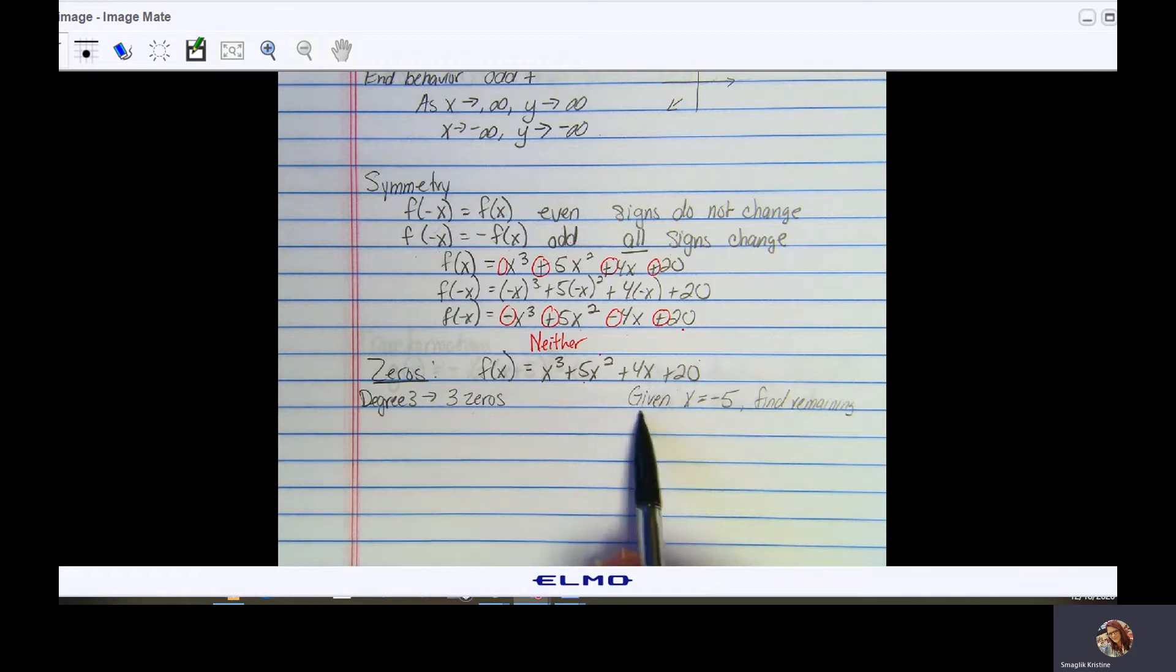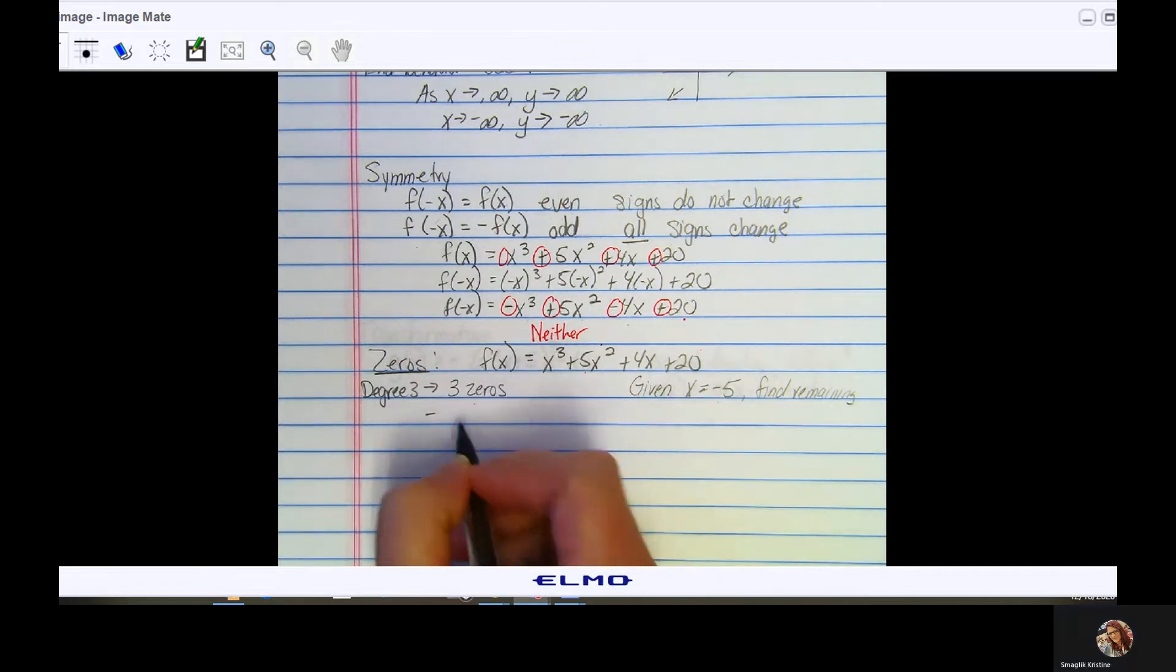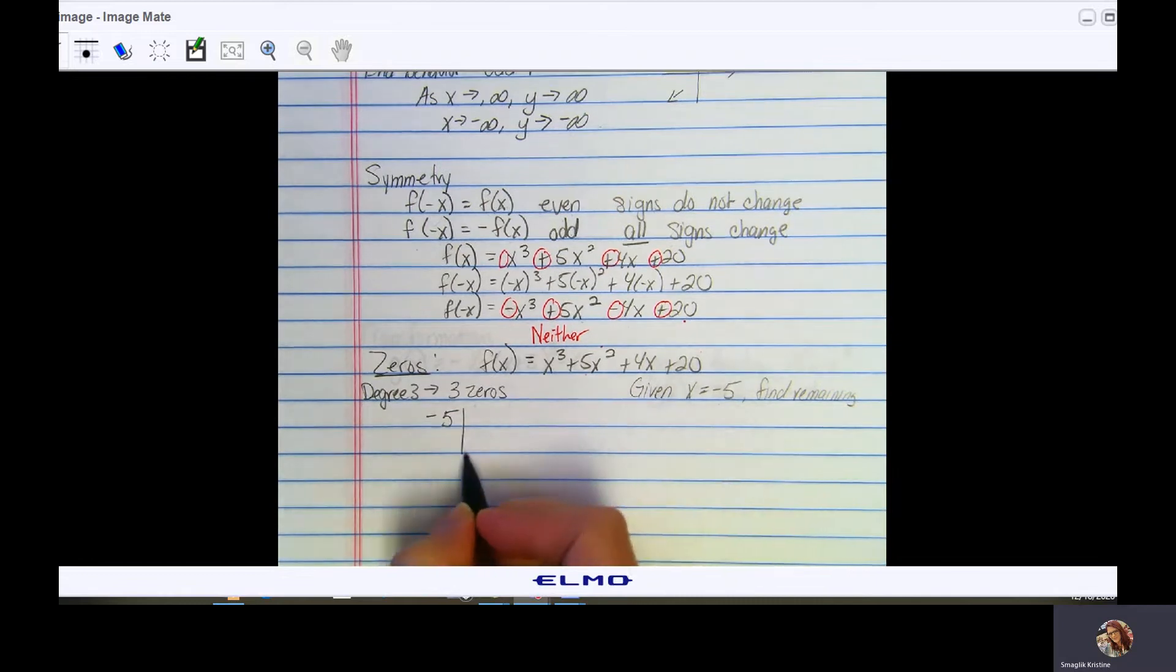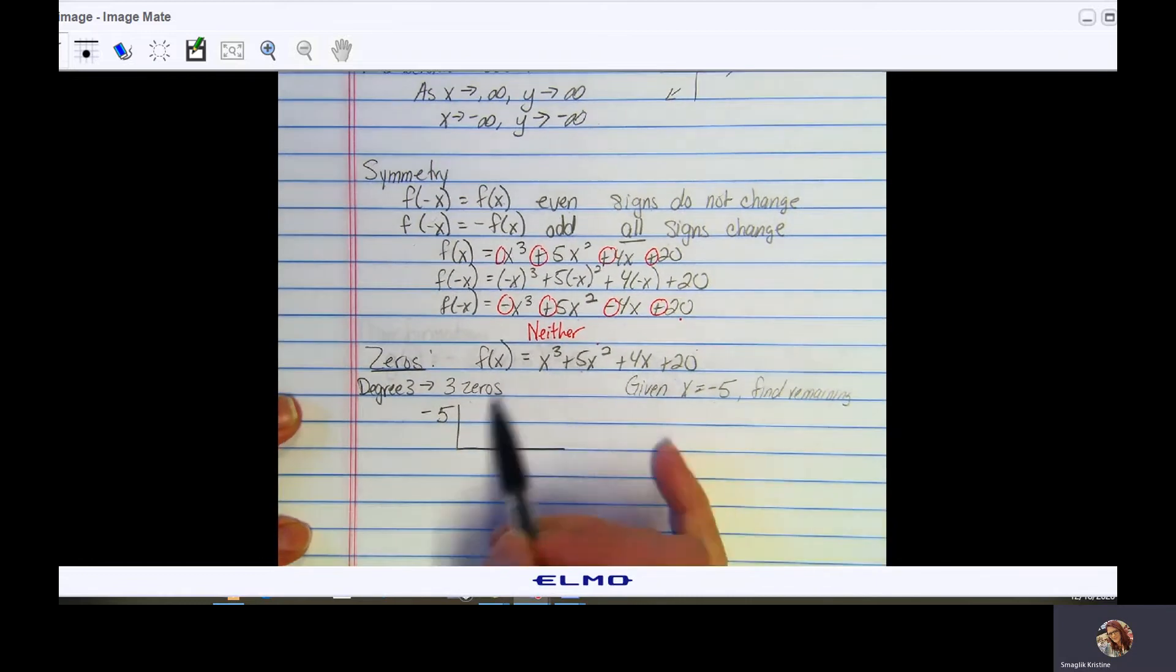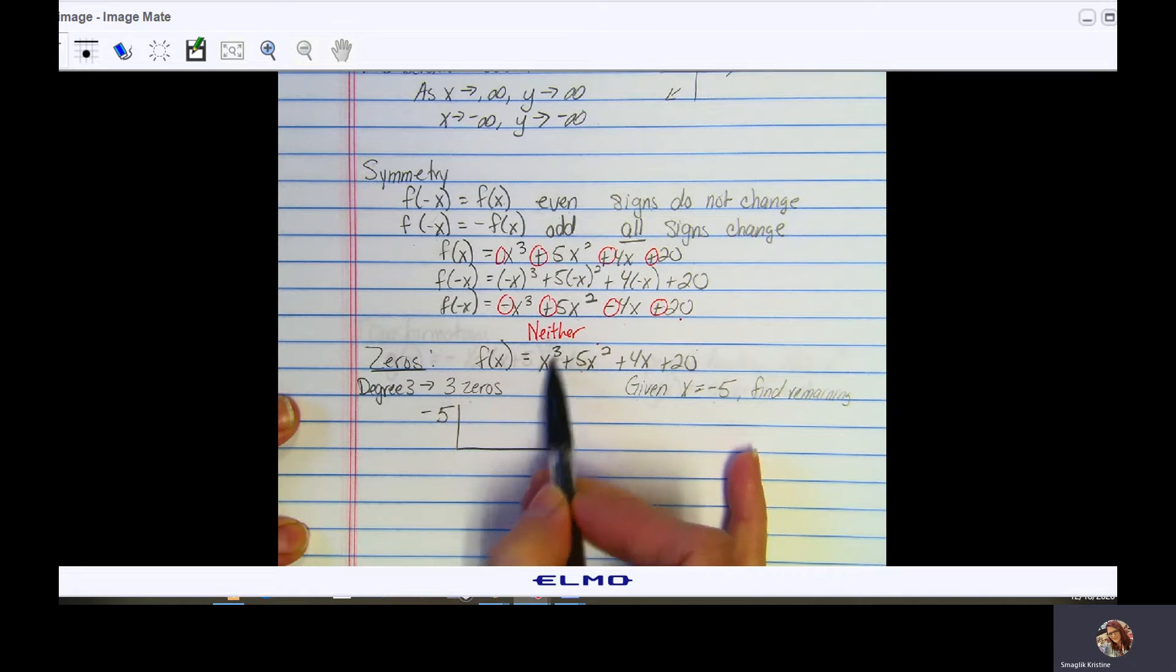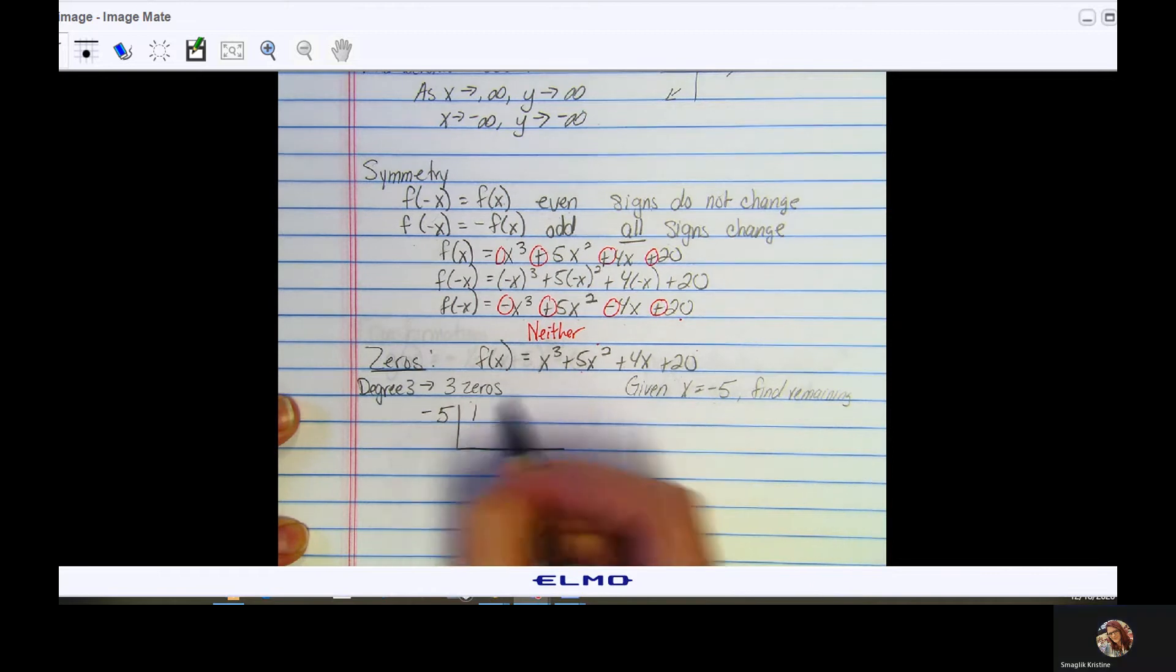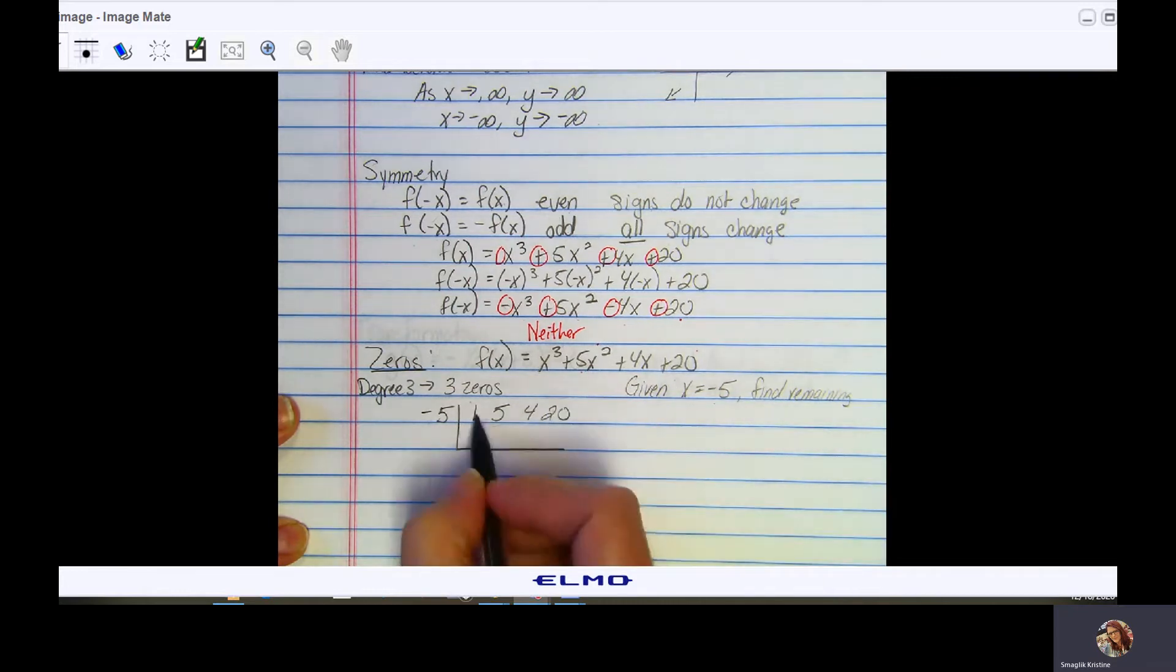Here we are given that one of the zeros is negative 5, and we're going to find the remaining zeros. To do this we're going to use synthetic division. I'm going to divide this polynomial by negative 5, which I know is a zero. Start doing my synthetic division. In here we put the coefficients of each term. You have to make sure you are in the descending degree order. This should be in standard form. Make sure before you put anything up here you are in standard form. My leading coefficient here is 1, then 5, 4, and 20.